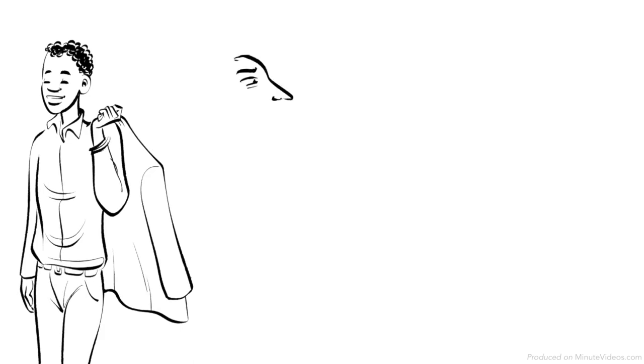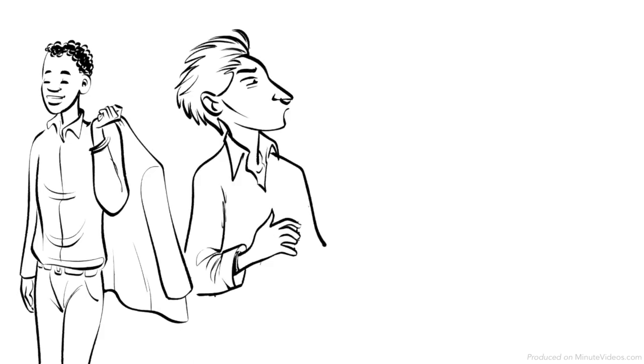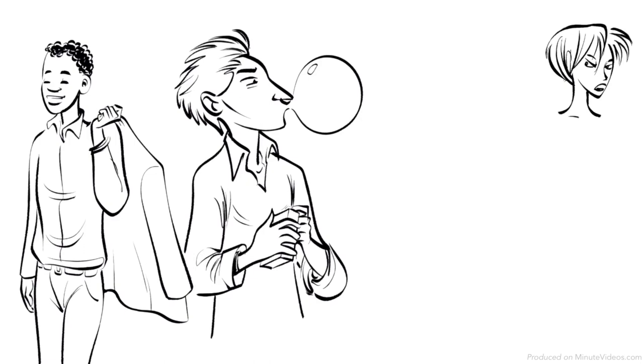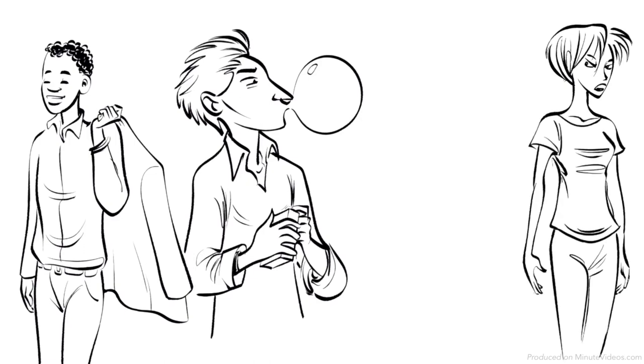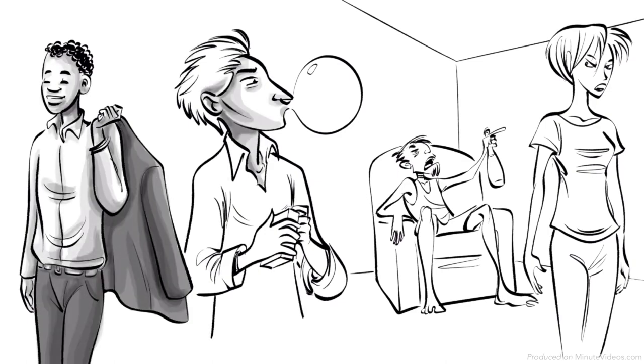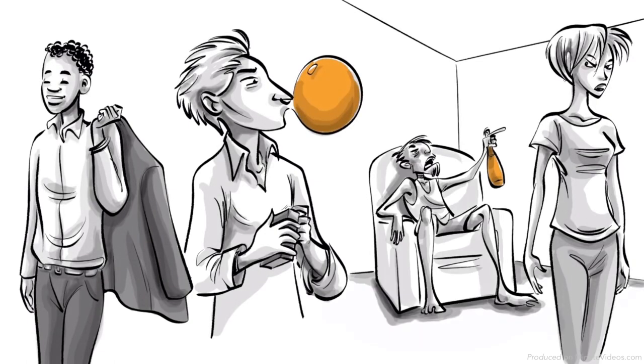Hans becomes a healthy and independent adult. Ernst suffers from trauma and develops an oral fixation. He tries to compensate for it by chewing gum all the time. Ida spends her entire life looking for the oral stimulation she was denied as an infant and therefore develops a manipulative and addictive personality.